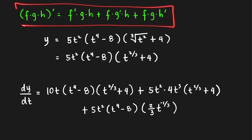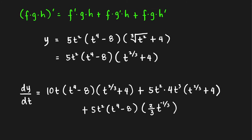Using this rule, take the derivative of one factor at a time. Taking the derivative of the first factor (5t²) gives 10t. Just copy the remaining two factors.